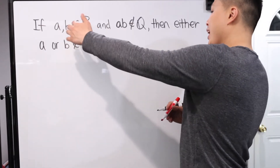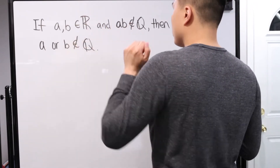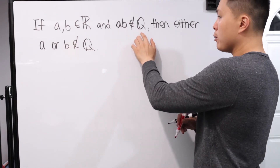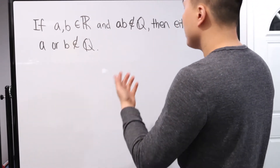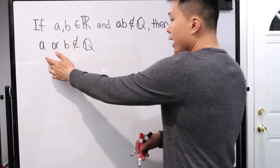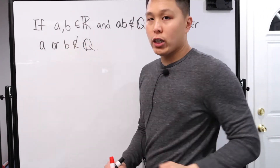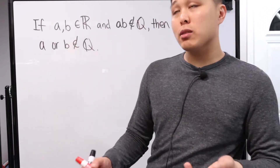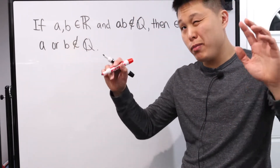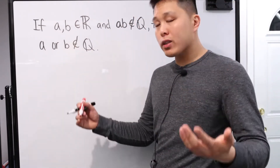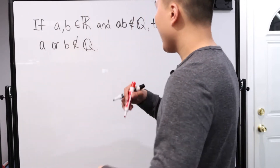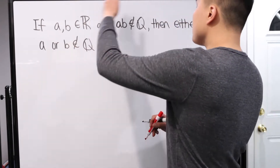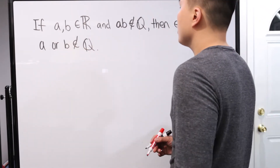Let's look at the second problem. If A and B are members of the real numbers and A times B is not rational — it's not a member of the rationals, you can't write the product AB as a fraction — then either A or B is not rational. You can prove this directly, but it would require a case-by-case approach, which I'll cover in a different video. Why go through that trouble when you can prove this by contrapositive?